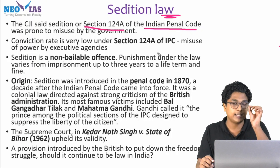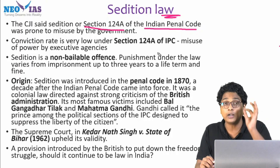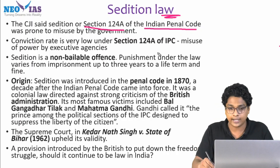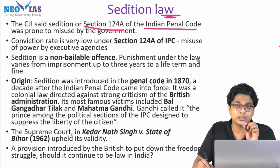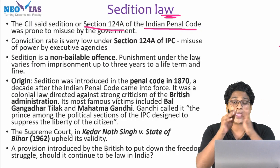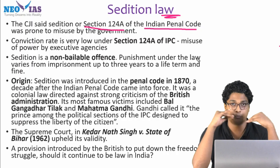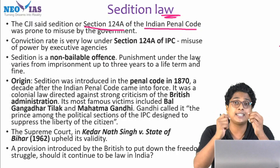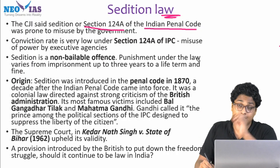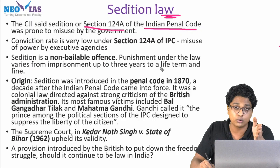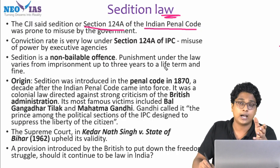The first thing to remember: sedition law is under Section 124A of the IPC. The foremost thing the Supreme Court has pointed out is that the conviction rate under this sedition law is very minimal — even less than 3% — which shows that executive agencies are misusing the power of the sedition law. The definition is very broad and it can be used to squash dissent against the government. It has been misused a large number of times in recent years, especially after 2016, with sedition cases imposed against activists, students, and others.